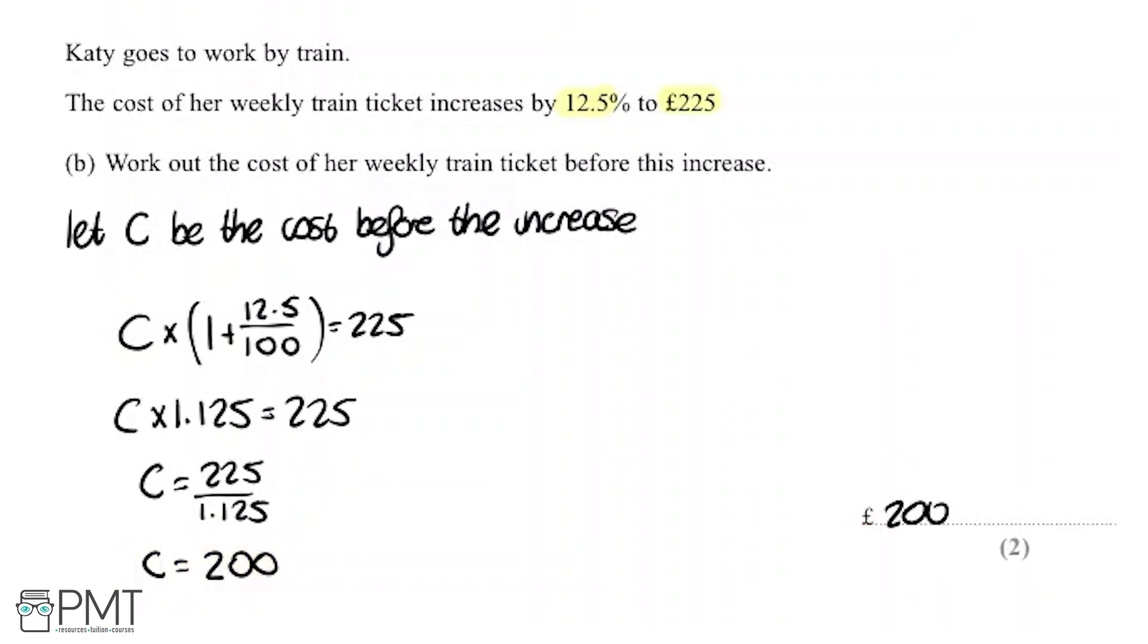So you get one mark here for your working, so for dividing 225 by 1.125, and you get the second mark for the correct answer of 200.